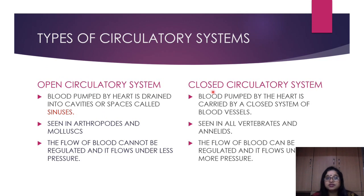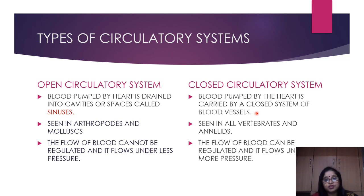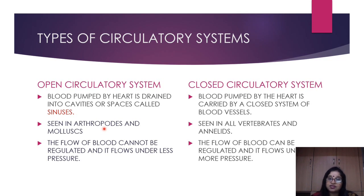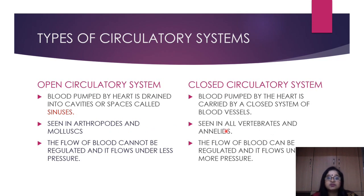In a closed circulatory system, blood pumped by the heart is carried through a closed network of blood vessels, and cells are never in direct contact with the circulating fluid. Exchange happens across the capillary walls. The open circulatory system is generally seen in arthropods — the cockroach has an open circulatory system with hemolymph — and also in mollusks. The closed circulatory system is seen in vertebrates and annelids; the earthworm is an example.